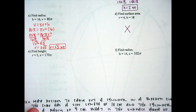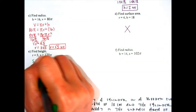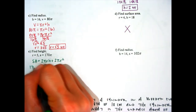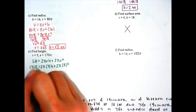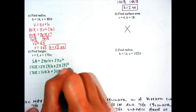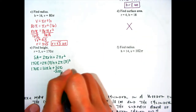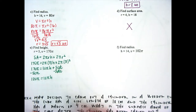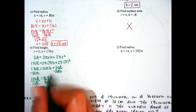Letter E: find the height given the radius and the surface area. The surface area formula is 2πrh plus 2πr². Plugging in 170π equals 2π times 5 times h plus 2π times 5 squared: that gives 10πh plus 50π. Subtracting 50π from both sides gives 120π equals 10πh. Dividing each side by 10π, we get height equals 12 units.